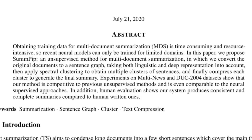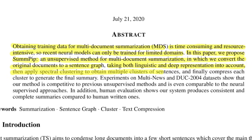Obtaining training data for multi-document summarization is time consuming and resource intensive, so recent neural models can only be trained for limited domains. In this paper, we propose SUMPIP, an unsupervised method for multi-document summarization in which we convert the original documents to a sentence graph, taking both linguistic and deep representations into account, then apply spectral clustering to obtain multiple clusters of sentences, and finally compress each cluster to generate the final summary.